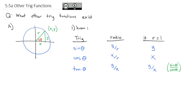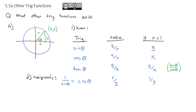There are actually three other trig functions we haven't worked with yet — these are the reciprocal functions. If I take 1 over the sine of theta, the reciprocal of sine, we call that the cosecant of theta. It's just the opposite ratio of sine: sine was y over r, so cosecant is r over y, or on the unit circle, 1 over the y-coordinate.